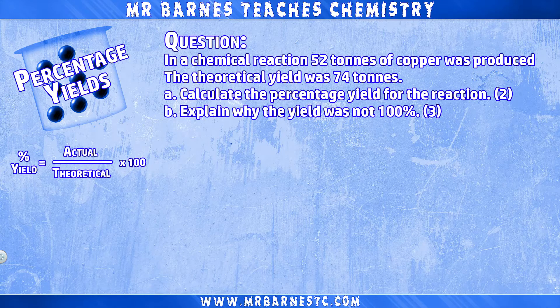In a chemical reaction, 52 tonnes of copper was produced; the theoretical yield was 74 tonnes. A, calculate the percentage yield, and B, explain why it's not 100%. So if we start off with the calculation,